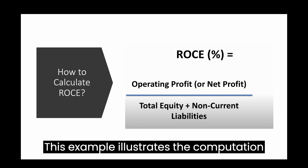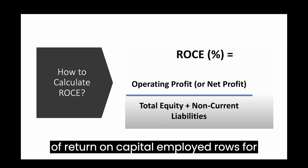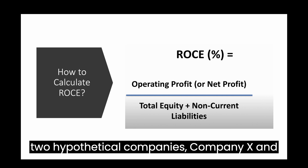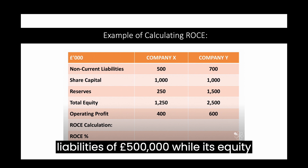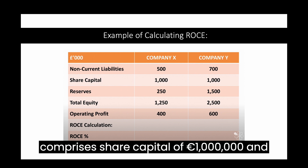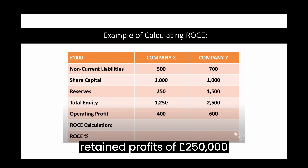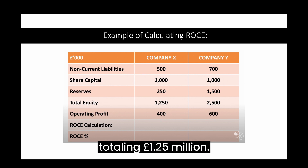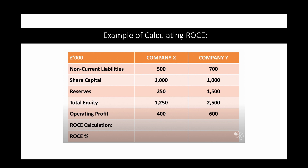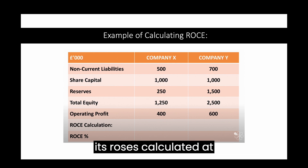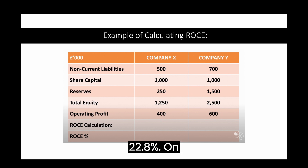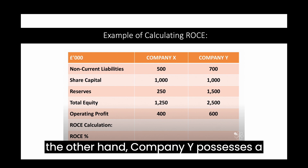This example illustrates the computation of Return on Capital Employed (ROCE) for two hypothetical companies: Company X and Company Y. Company X reports non-current liabilities of £500,000, while its equity comprises share capital of £1 million and retained profits of £250,000, totalling £1.25 million. With an operating profit of £400,000, its ROCE is calculated at 22.8%.